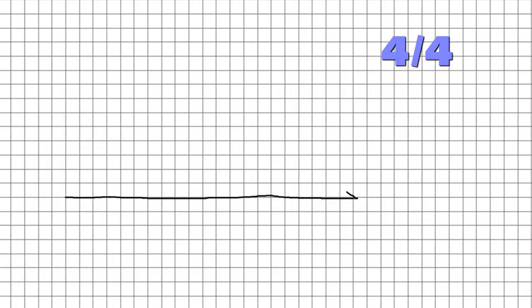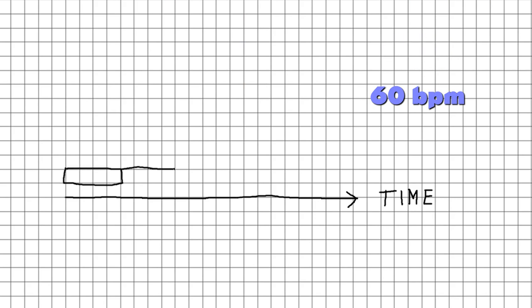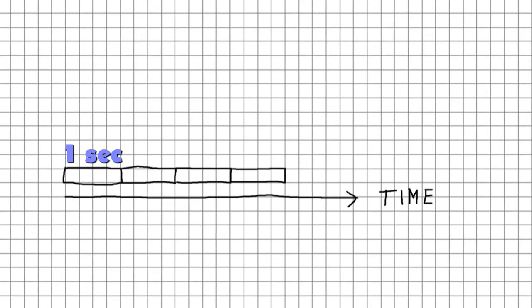Let's say there is a 4-4 time signature and there are 60 beats per minute. One measure can be visualized like this. The quarter notes are represented by rectangles, and they happen to be exactly one second long. So the whole measure lasts 4 seconds, and there is a timeline. Be aware that each note has a beginning — the left edge of each rectangle — and an end, the right edge. We play or clap at the left edge of each rectangle, at the beginning of the note.